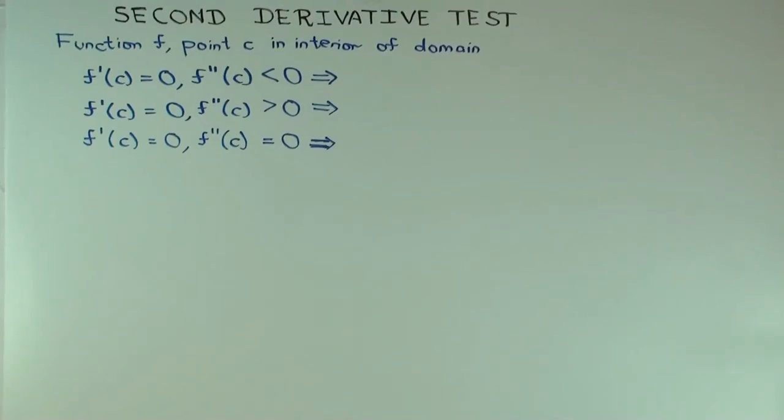So in this talk, I'm going to briefly describe the second derivative test. And the goal of the test is to figure out if a given critical point for a function is a point of local maximum.